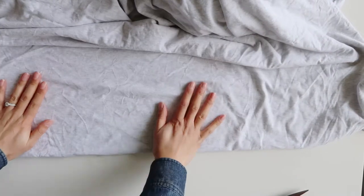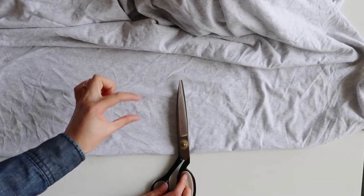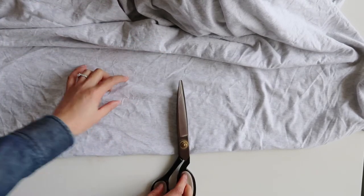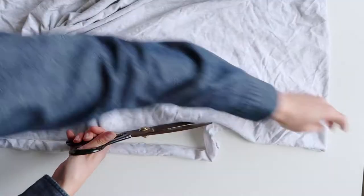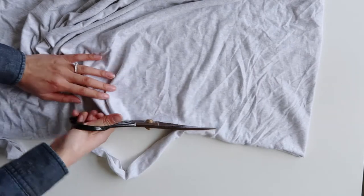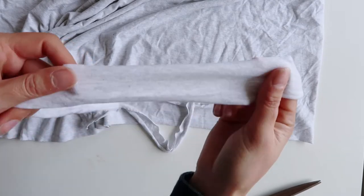So first things first, we're going to make that t-shirt yarn. If you don't have anything you can use an old t-shirt, you can use some remnant fabric. I've done this before in previous videos so check those out if this little clip isn't that clear, I'll link it below.